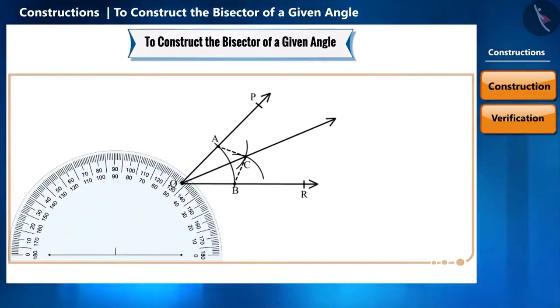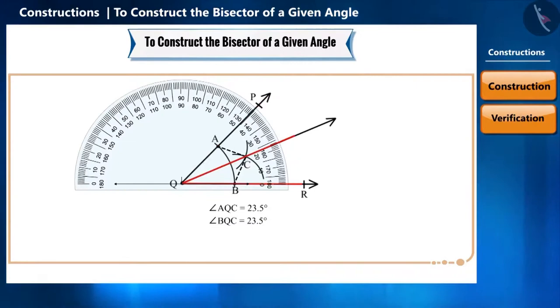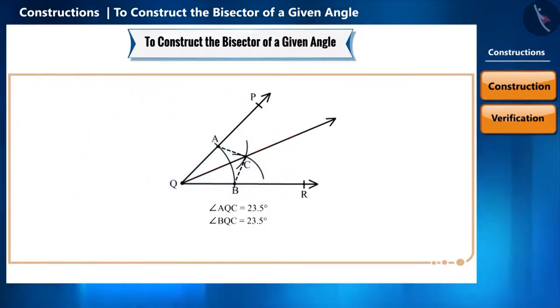Here, we can measure these angles with the help of a protractor. We can see that angle AQC is equal to angle BQC. Therefore, we can say that angle PQC and angle RQC will also be equal.